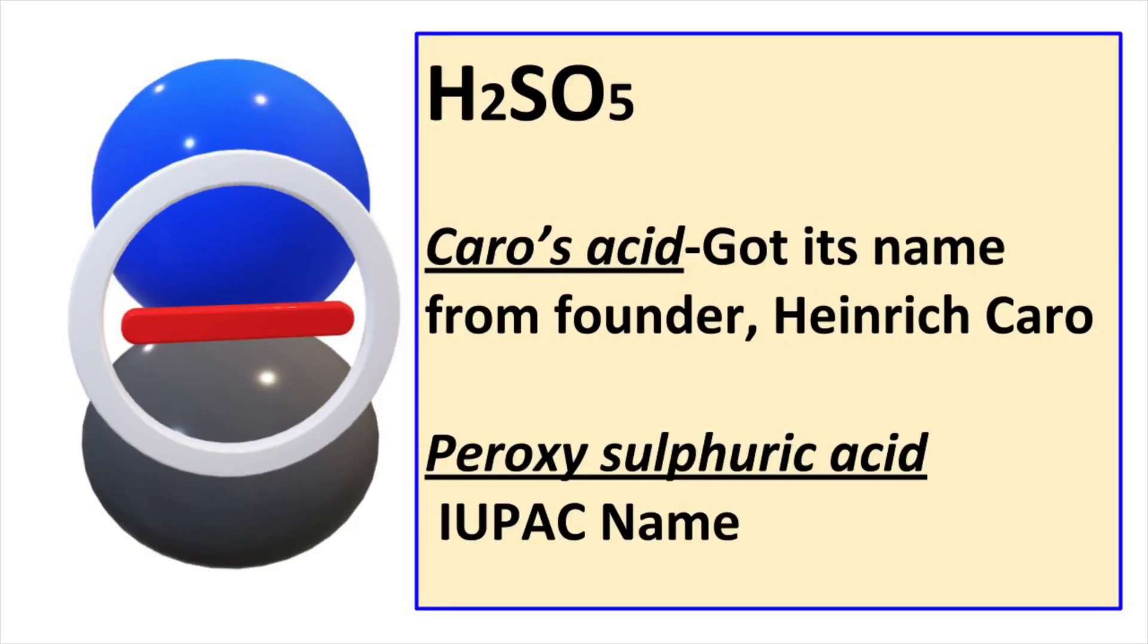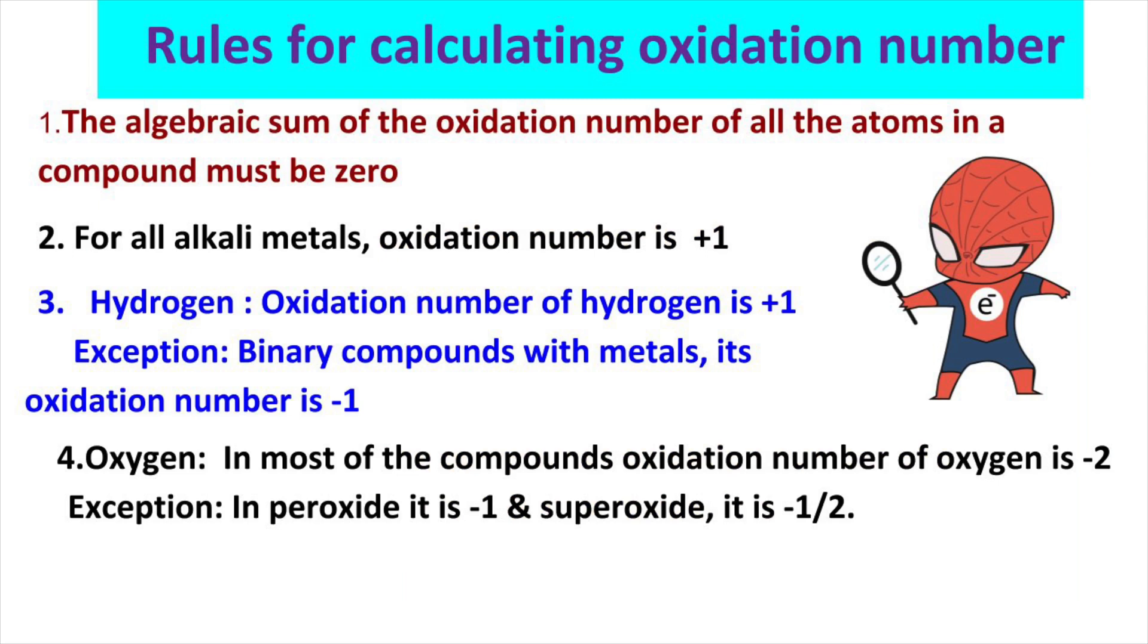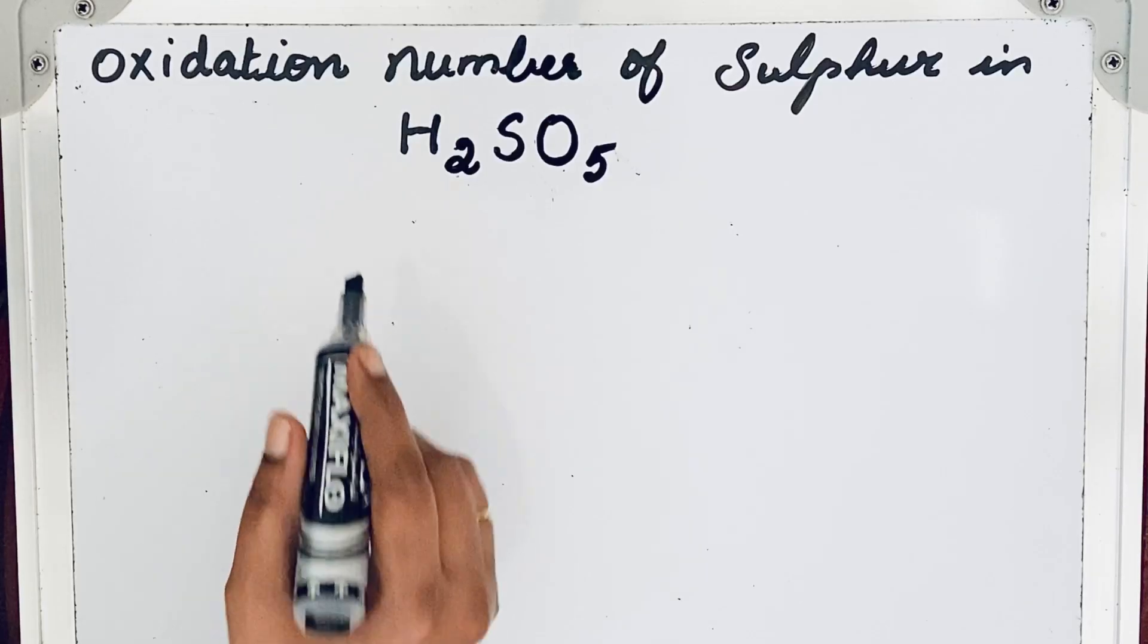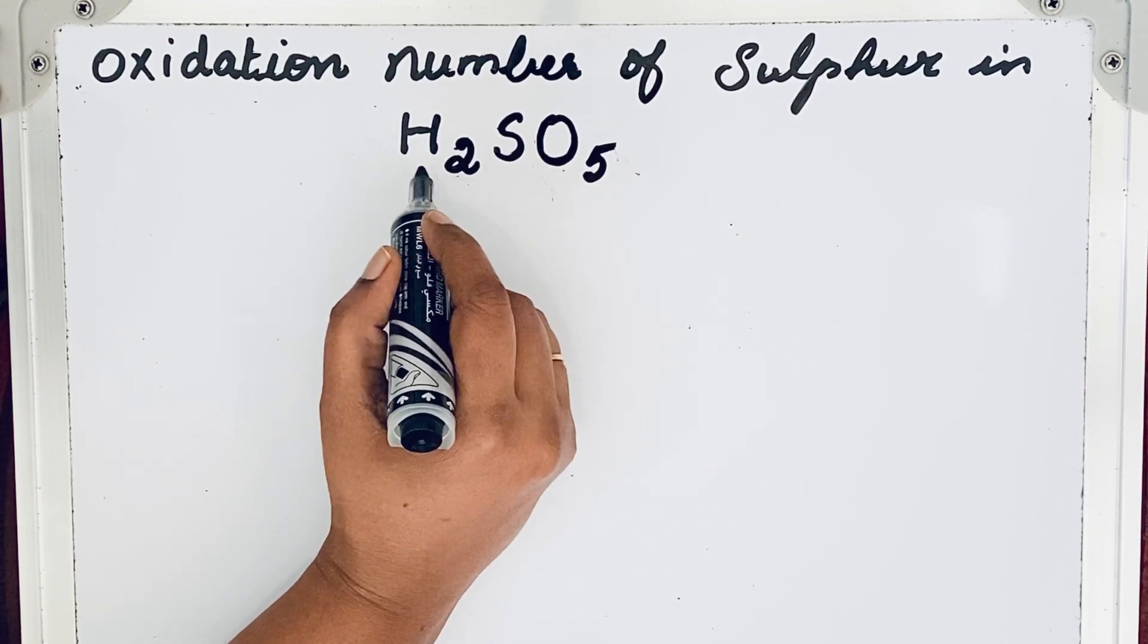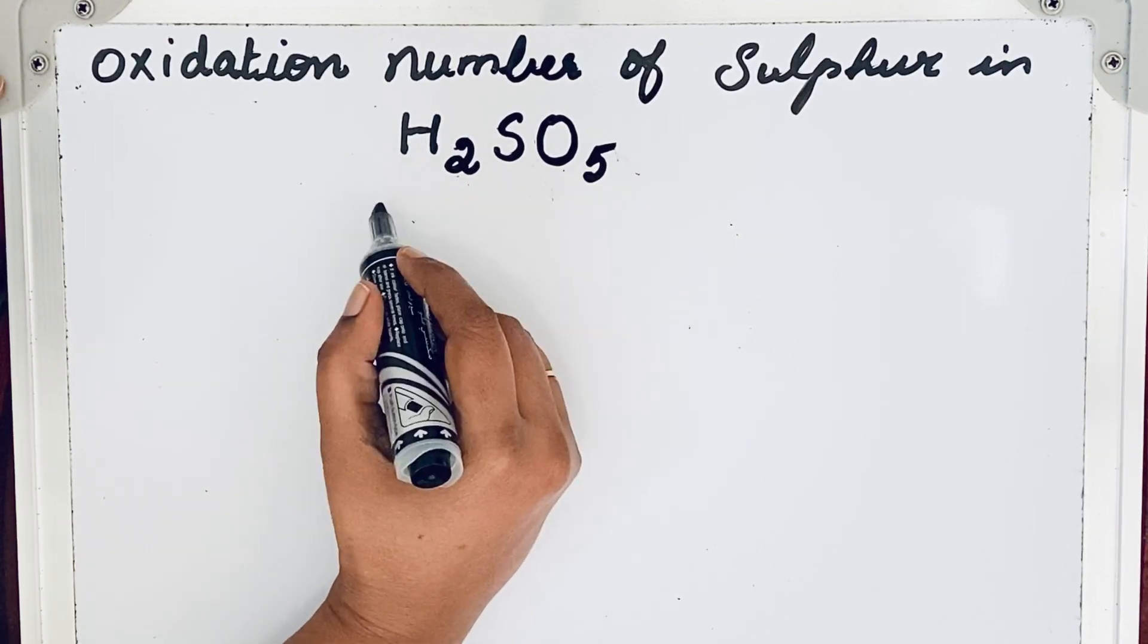Welcome to Aurora Chemistry for everyone. Let us see how to find oxidation number of sulfur in H2SO5. To find oxidation number of sulfur we need to follow certain guidelines. According to the guidelines, oxidation number of hydrogen is plus 1, so here there are two hydrogen atoms, so 2.